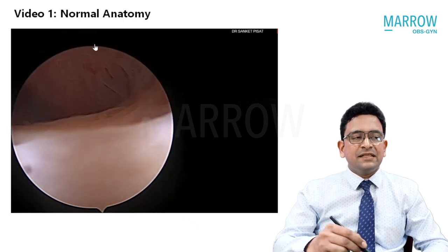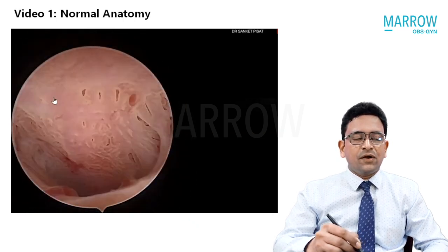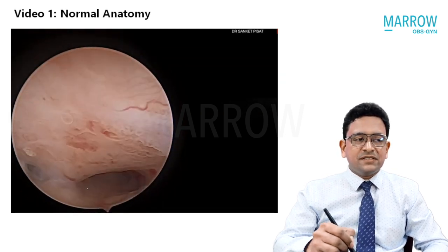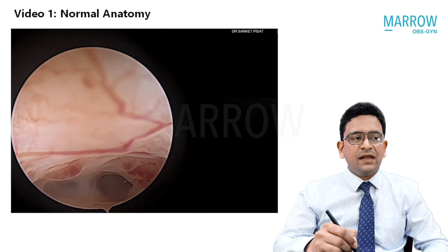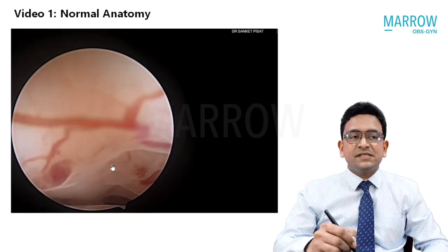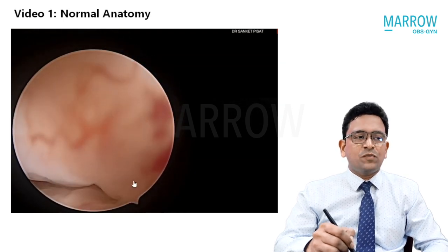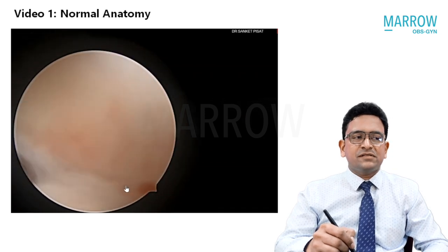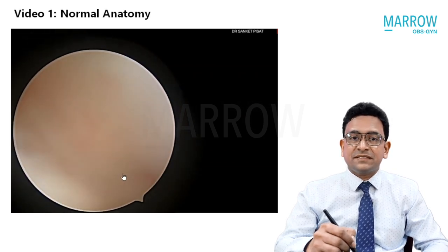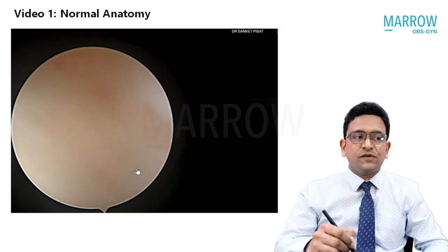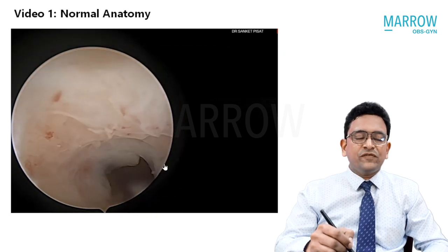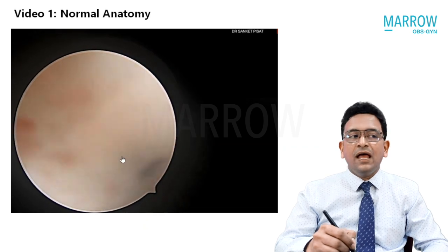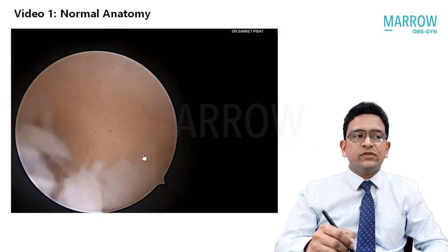You are now able to see the cervix — this is the external os. The telescope is moving inside the cavity; you can see the folds of the cervical canal. What is coming up now is the internal os. The telescope is gradually guided into the internal os, which usually faces some resistance because of its nature.